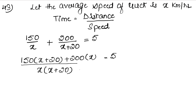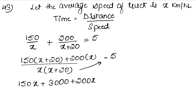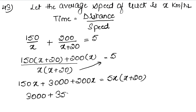Expanding the numerator: 150(x + 20) + 200x equals 5 times x(x + 20). Opening the brackets: 150x + 3000 + 200x equals 5x squared plus 100x. Combining the x terms on the left gives 350x + 3000.